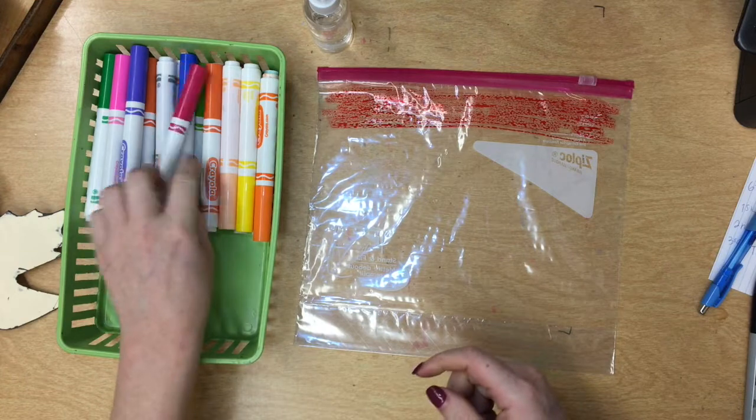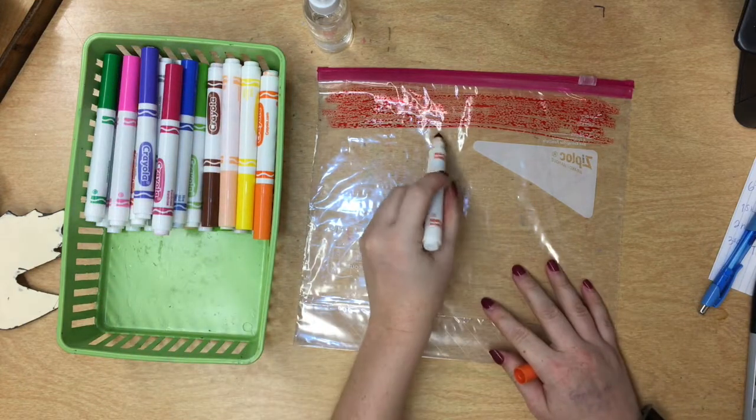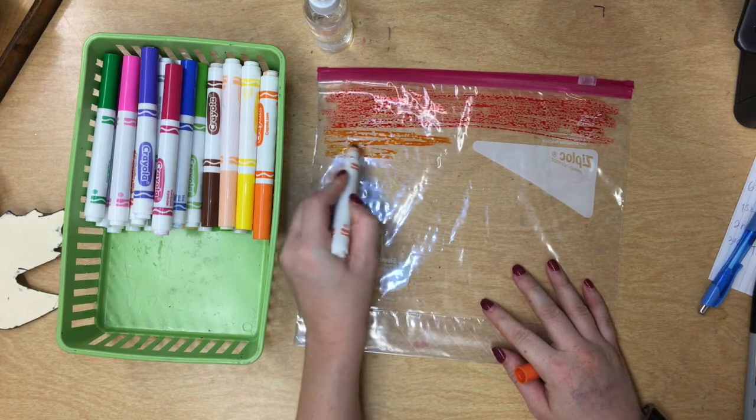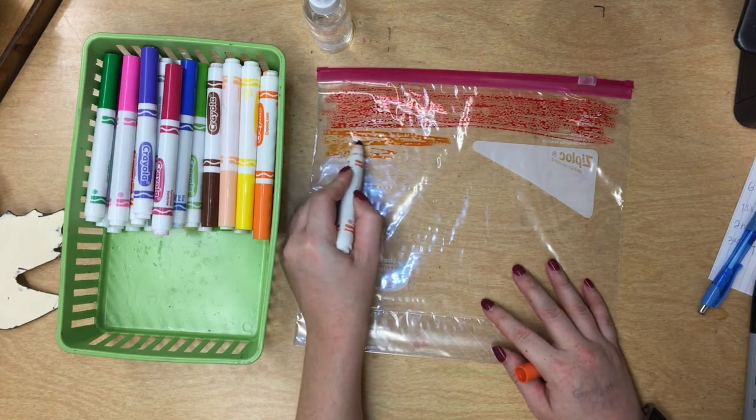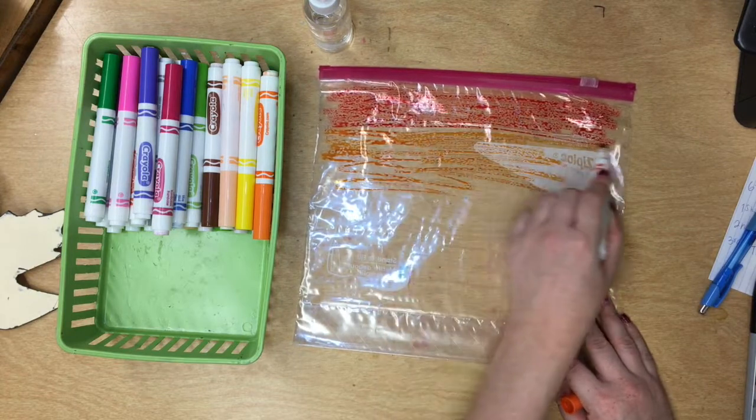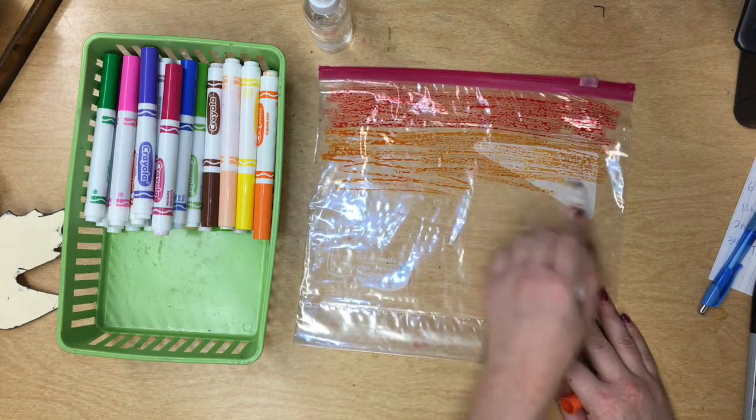Don't worry too much about it being perfect. You're going to notice it doesn't really stick on the Ziploc bag, so don't spend too much time, don't try to make it perfect. No, you don't want too many scribbles or colors. You want that Goldilocks coloring, just right in the middle.